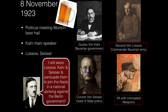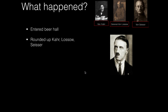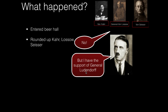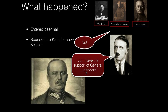Since they were holding this meeting without him, Hitler intended to disrupt it with his stormtroopers carrying concealed weapons. The plan was to seize Lossow, Kahr, and Seisser and persuade them to join the Nazis in a national uprising against Berlin. He entered the beer hall, fired a pistol shot into the ceiling, declared 'the national revolution has begun,' and rounded up Kahr, Lossow, and Seisser in a back room. Shouting at them and gesticulating with his pistol, he eventually appeared to gain their reluctant support, telling them he had the backing of General Ludendorff.